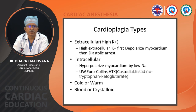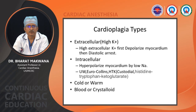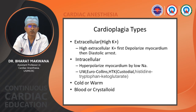HTK stands for histidine-tryptophan-ketoglutarate — these are the agents added for cardioprotection, and it is also known as Custodiol. By temperature, cardioplegia can be cold or warm. It can be used as plain crystalloid alone, diluted in Ringer's lactate at a 4:1 concentration, or diluted in blood.